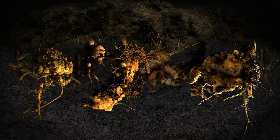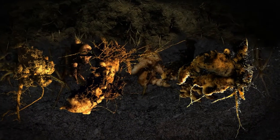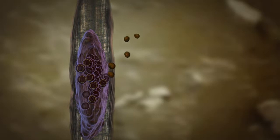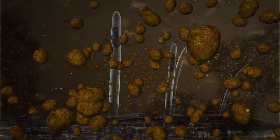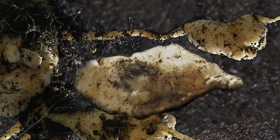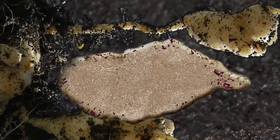Secondary zoospores initiate the root symptoms that cause yield loss in infected plants. Large numbers of these zoospores can be produced in the root hairs. They infect the entire root surface, not just the root hairs. After infection, these zoospores differentiate into plasmodia that grow and reproduce rapidly and spread deep into the root tissue.